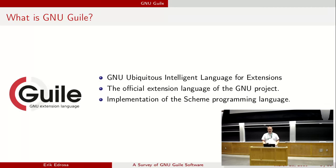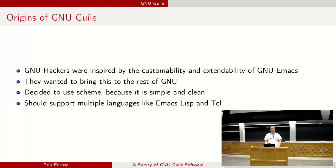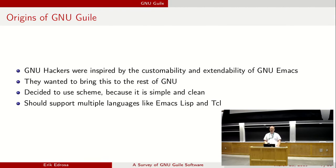So what is GNU Guile? GNU Guile stands for the GNU Ubiquitous Intelligent Language for Extensions. It's the official extension language of the GNU project and an implementation of the Scheme programming language. It was inspired by the customizability and extendability of GNU Emacs, and GNU hackers wanted to bring this to the rest of GNU. You can read more about the history of Guile in the manual, which provides really interesting background on the purpose of creating Guile.